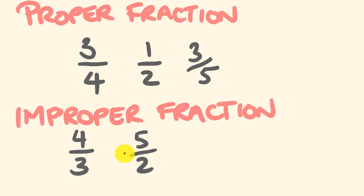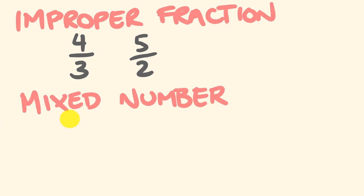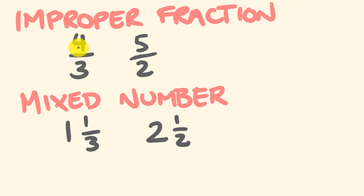We can change an improper fraction to what's known as a mixed number. A mixed number is where you have a mixture of whole numbers and fractions. So four out of three, as a mixed number — and I'll show you how to work these out at a different stage, they're pretty easy — would be written as one and one third. Or five over two could be written as two and a half. So an improper fraction can be converted across to a mixed number.